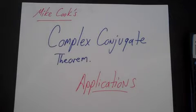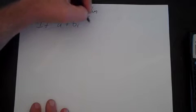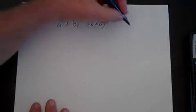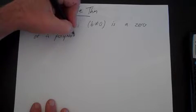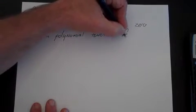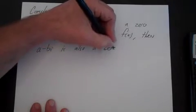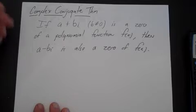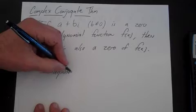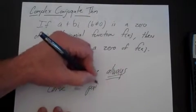Let's continue looking at the complex conjugate theorem and a few applications of it. The complex conjugate theorem says that if a + bi, where b is not equal to zero — that is, if an imaginary zero is a zero of a polynomial function f(x) — then a - bi is also a zero of f(x). Whenever you have an imaginary zero, its complex conjugate will also be an imaginary zero. Another way to say that is: imaginary zeros always come in pairs.